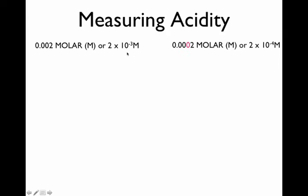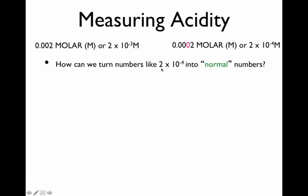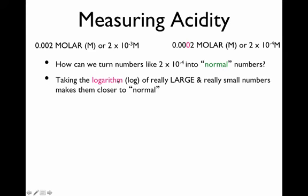To recap: the left container's acid concentration was 2 × 10⁻³ molar; the right container's was 10 times lower at 2 × 10⁻⁴ molar. There is a more modern method that manipulates these molar concentrations. The person who developed it asked: how can I turn a number like 2 × 10⁻⁴ or 2 × 10⁻³ into a more understandable, more normal number? The answer: take the logarithm.